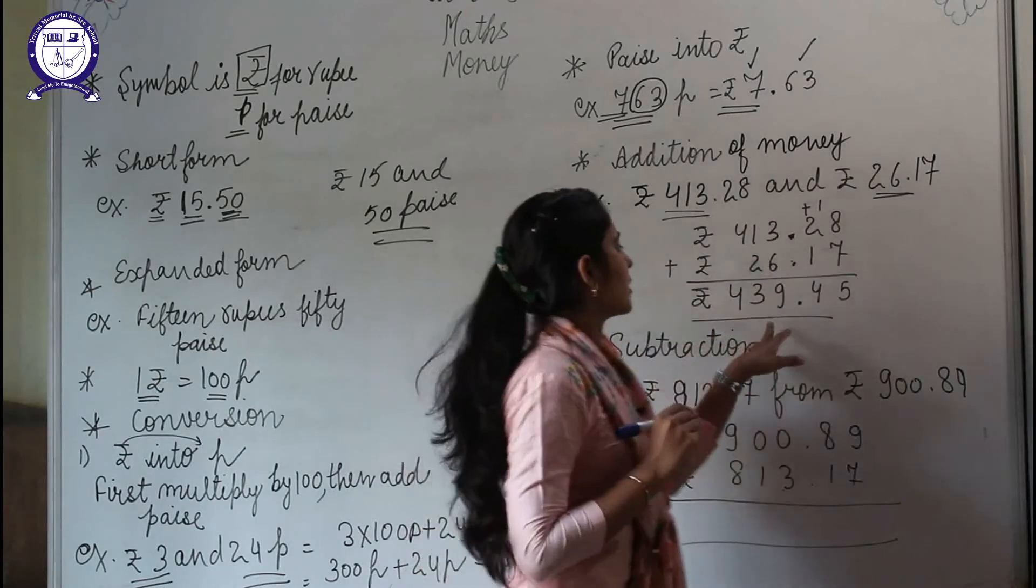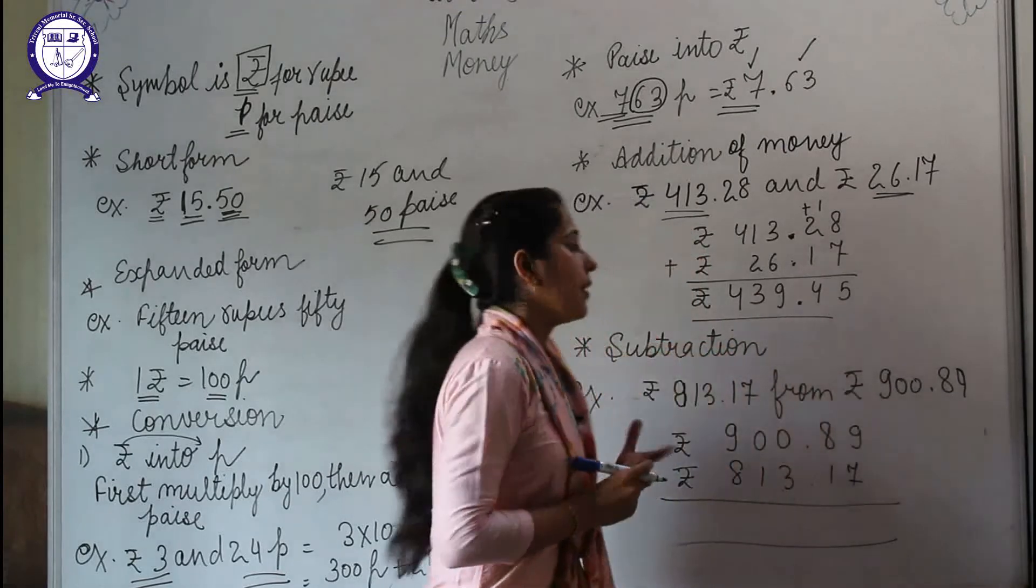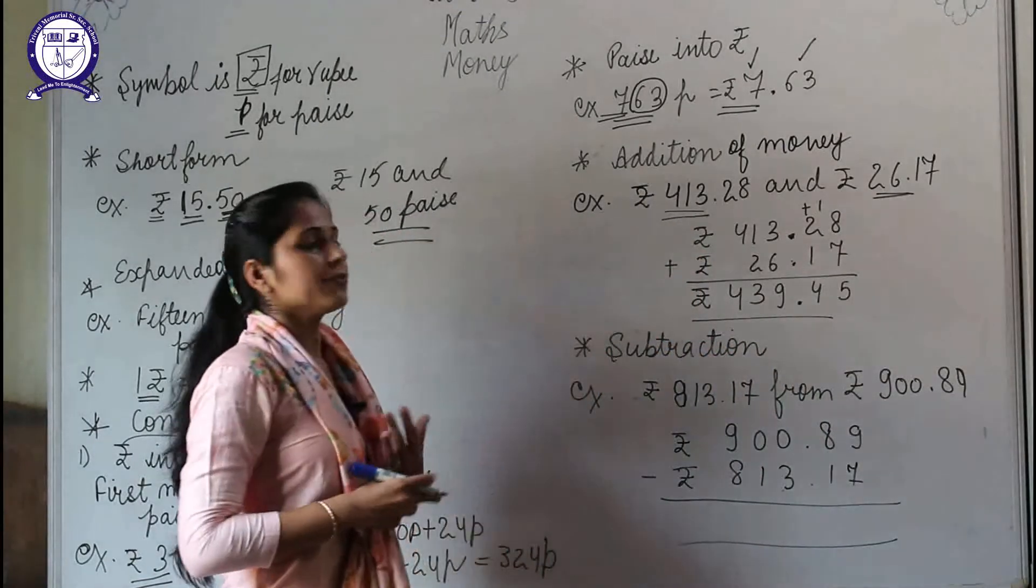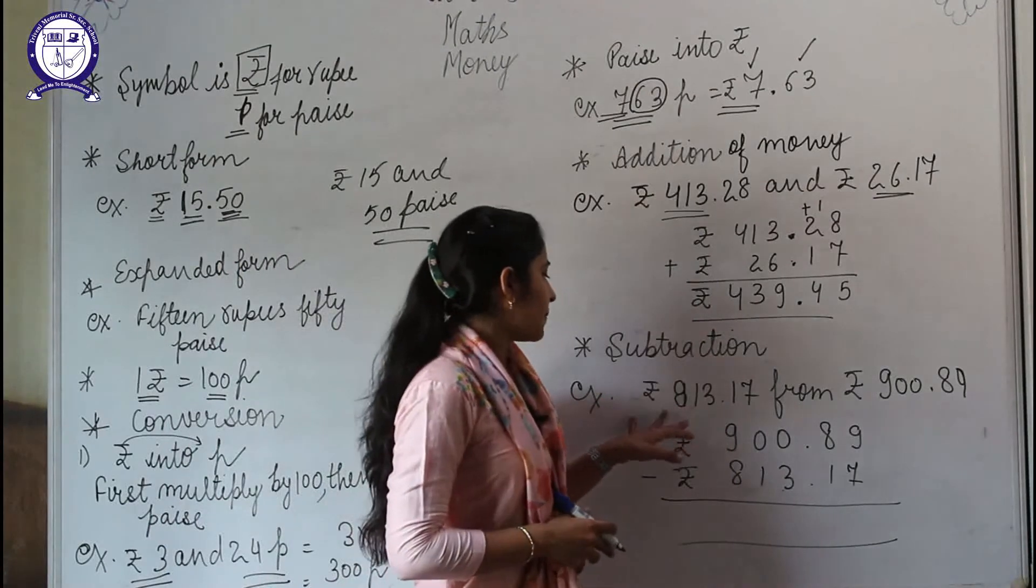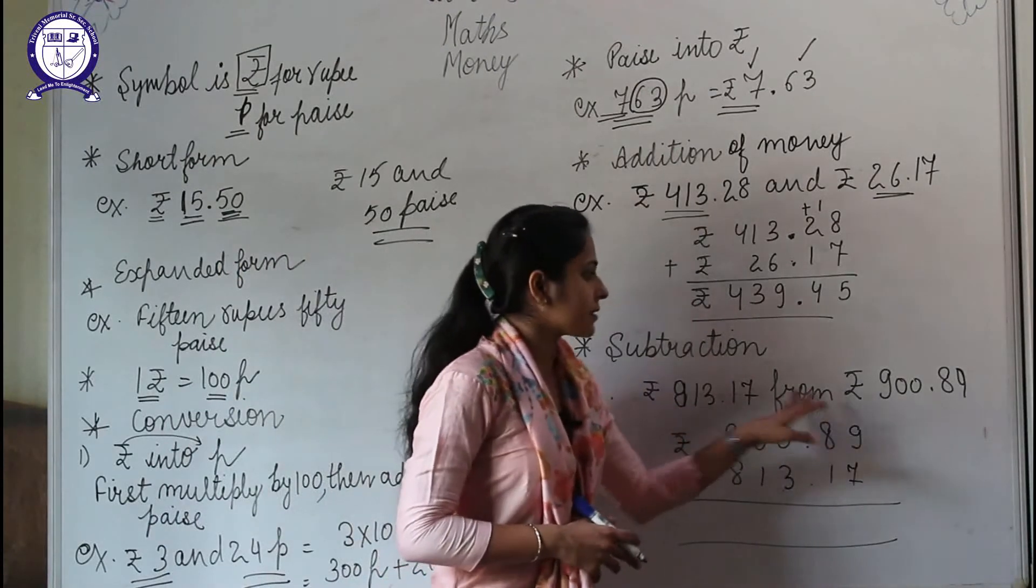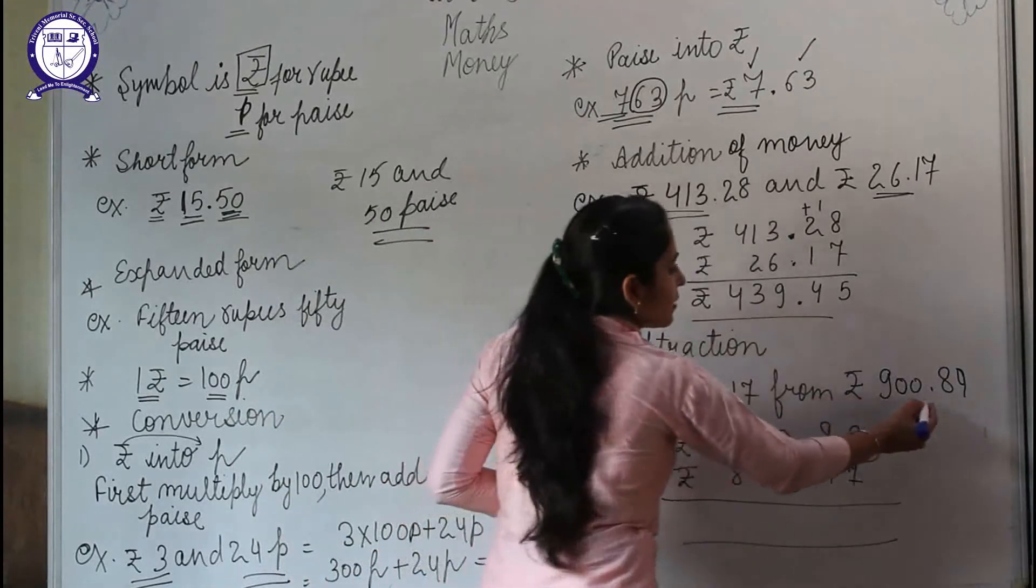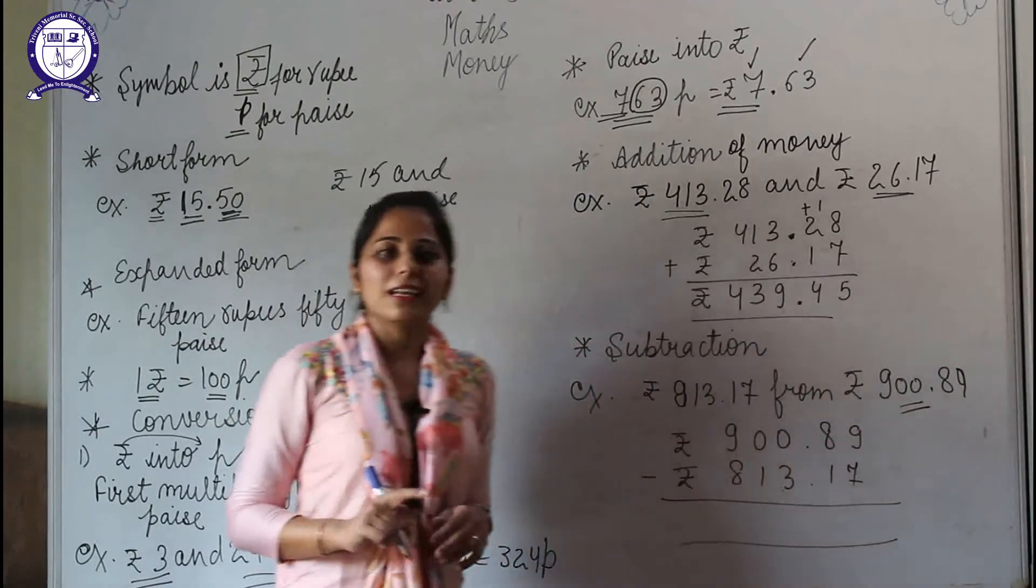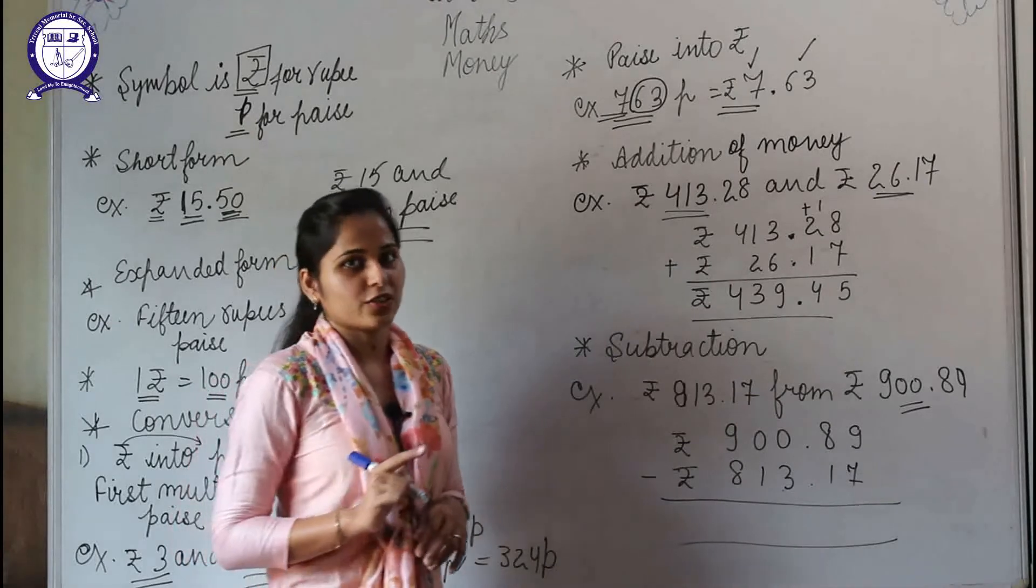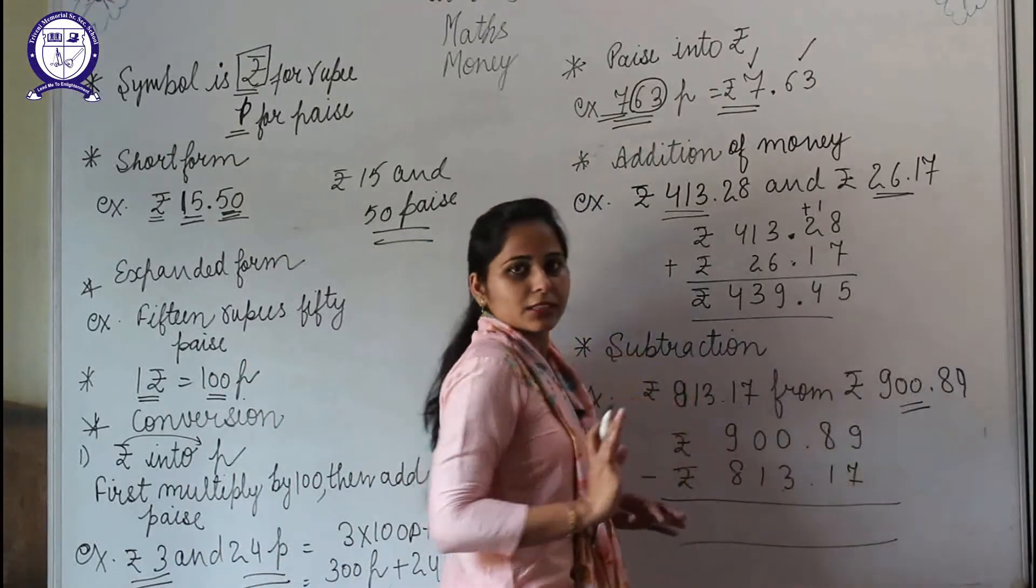will be ₹439.45. Now, subtraction of money. Sometimes we need to subtract money. Here we have ₹813.17 from ₹900.89. 'From' means we'll subtract. Only smaller amounts can be subtracted from larger amounts. We'll arrange the numbers as we